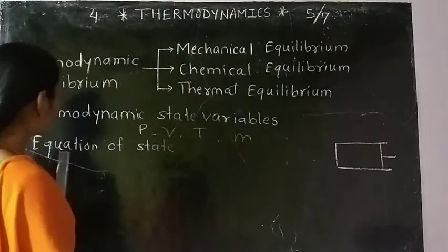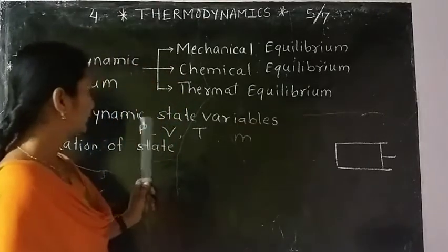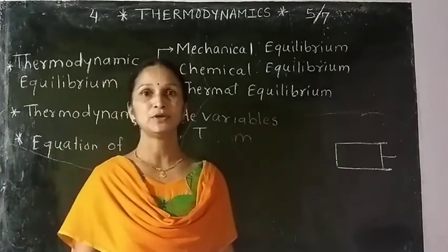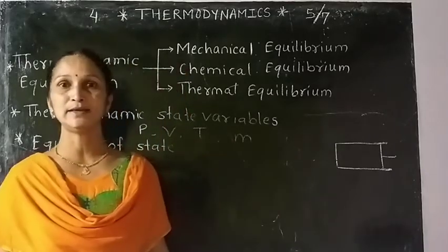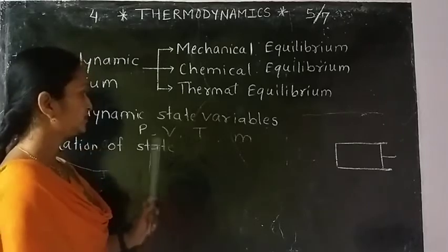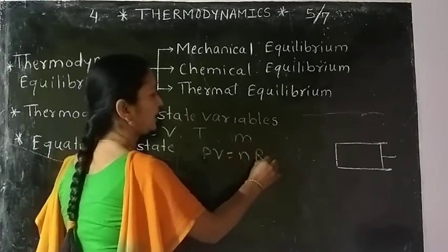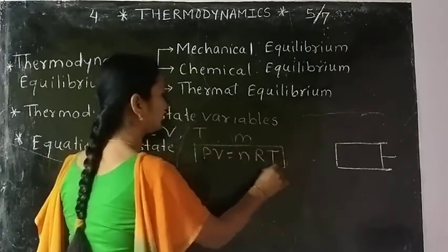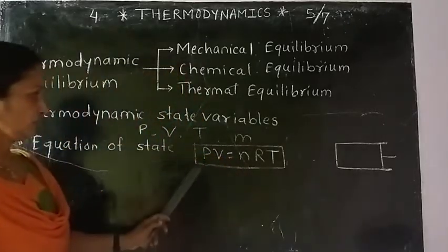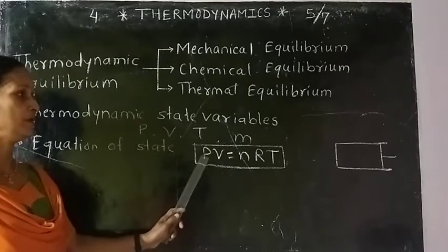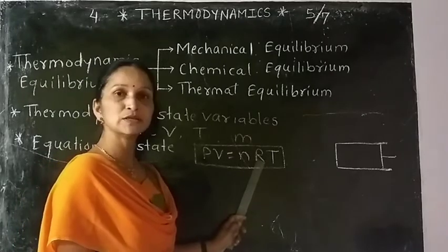Next is the equation of state. The mathematical relation between thermodynamic state variables at equilibrium is known as the equation of state. For an ideal gas, the relation is PV = NRT. Here P, V, and T are the variables; N is the number of moles and R is the universal gas constant. We can study the variation with changes in P and V, P and T, or V and T.